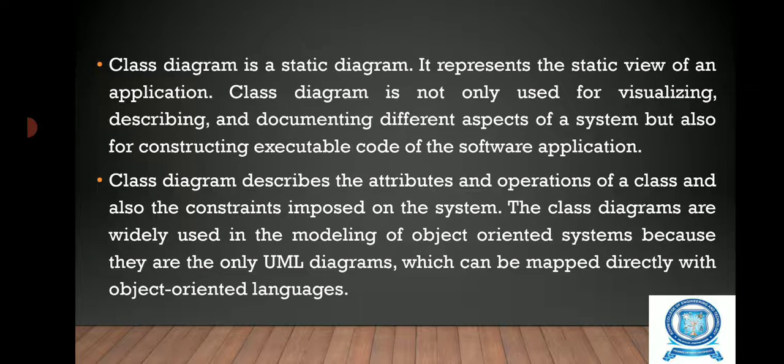Class diagram is a static diagram which represents the static view of an application. The class diagram is not only used for visualizing, describing and documenting different aspects of the system, but also it is used for constructing the executable code of the software application. The class diagram describes the attributes and operations of a class and also the constraints imposed on the system. The class diagrams are widely used in the modeling of object oriented systems because they are the only UML diagrams which can be mapped directly with object oriented languages.